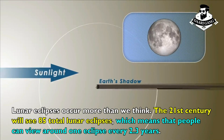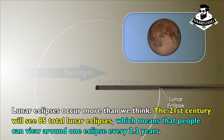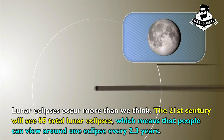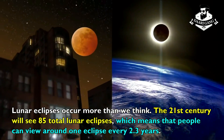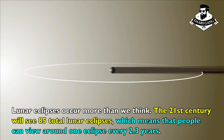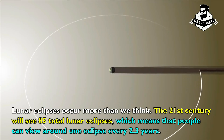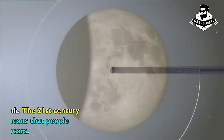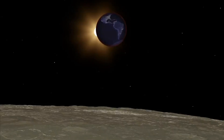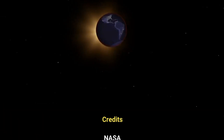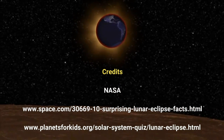Lunar eclipses occur more than we think. The 21st century will see 85 total lunar eclipses, which means that people can view around one eclipse every 2.3 years.